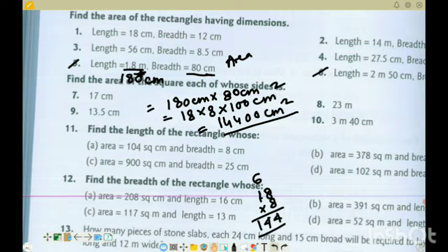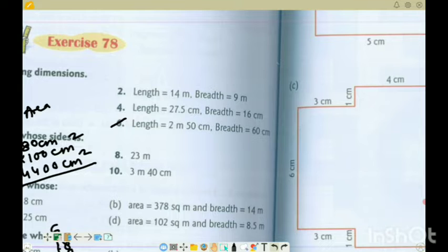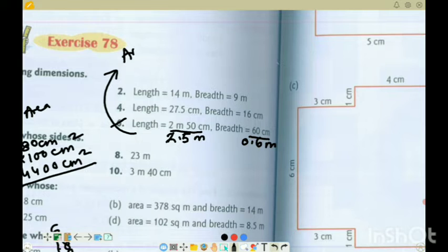Next, we have question number 6. Question number 6: the length is 2 meter 50 centimeter, breadth is 60. So we can use either meter or centimeter. For 250, we can say centimeter, or we can do it in meters. So this would be 2.5 meter for length, 0.6 meter for breadth.